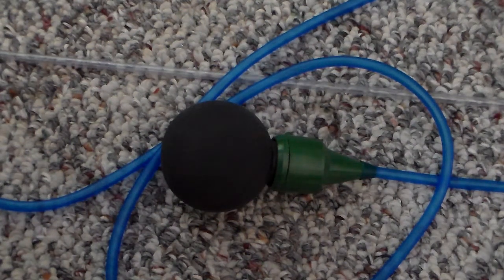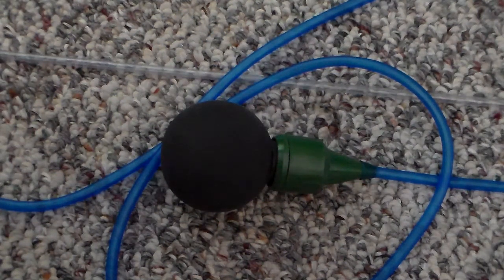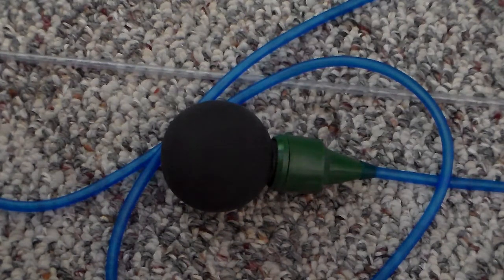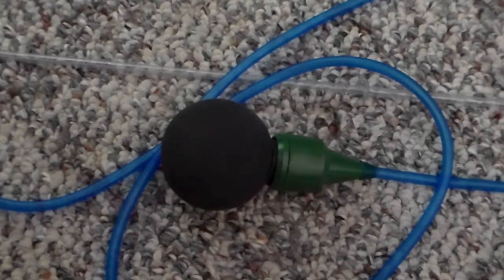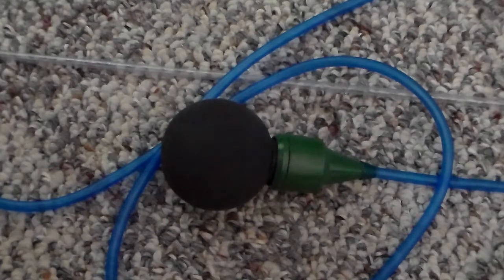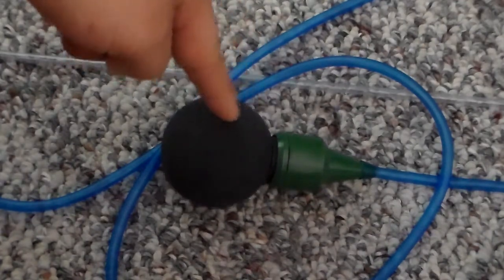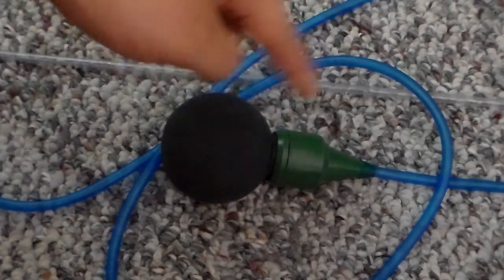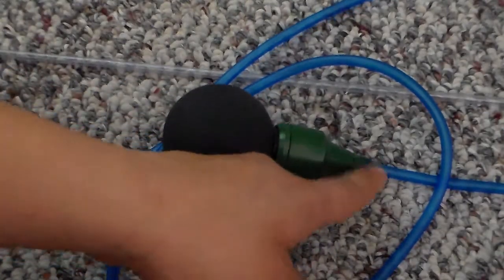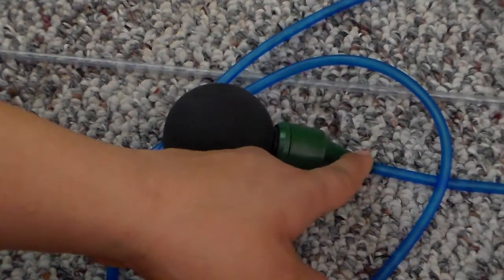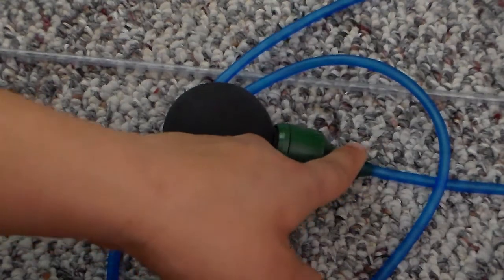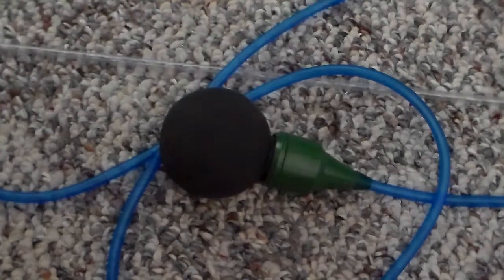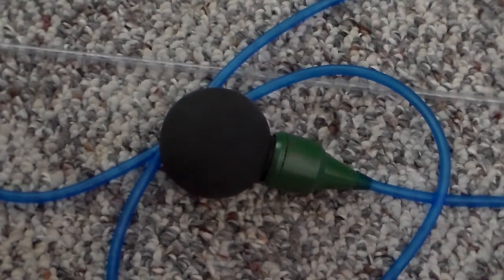So what we have here is an Eheim suction or siphon starter, and the purpose of this bulb is to help you prime your canister filter after you clean it. It has a little adapter here that will fit almost any size hose. You stick this at the end of the hose, give it a little squeeze, and that should pretty much prime your canister.